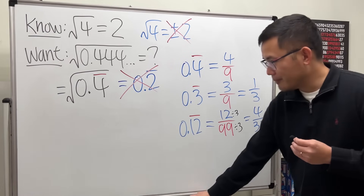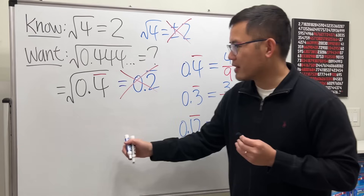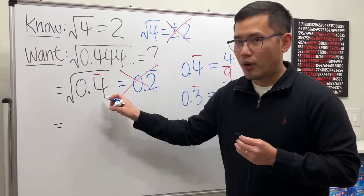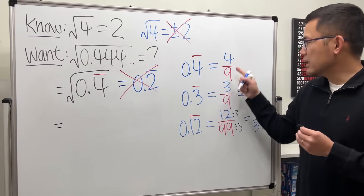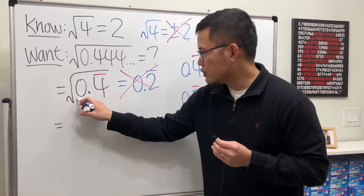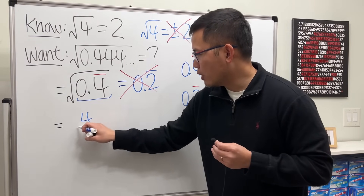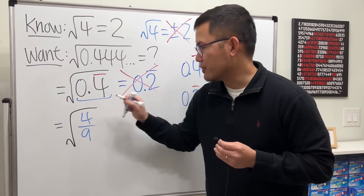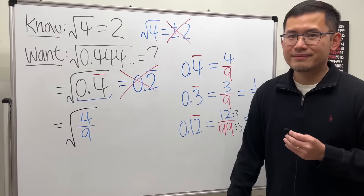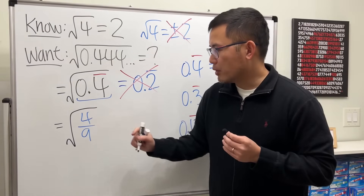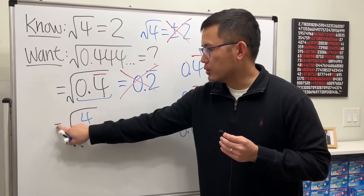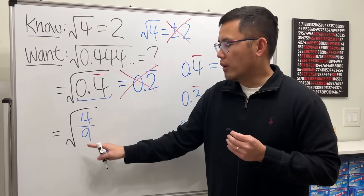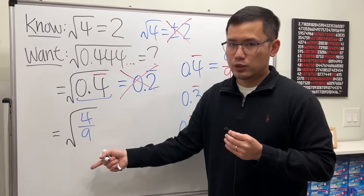So here's the deal. We can come back here. 0.4 repeating is the same as 4 over 9, so we can replace that with 4/9 and then take the square root of it. Because 4 and 9 are both positive, we can go ahead and do square root of 4 over square root of 9.